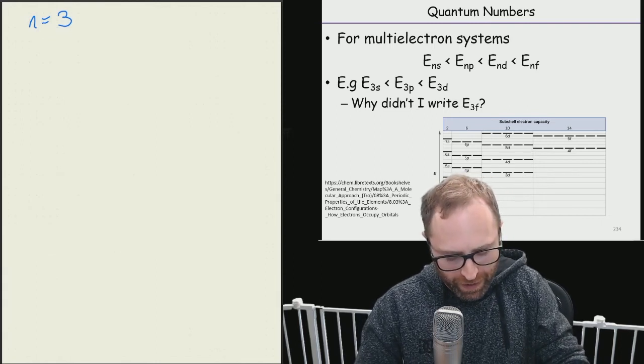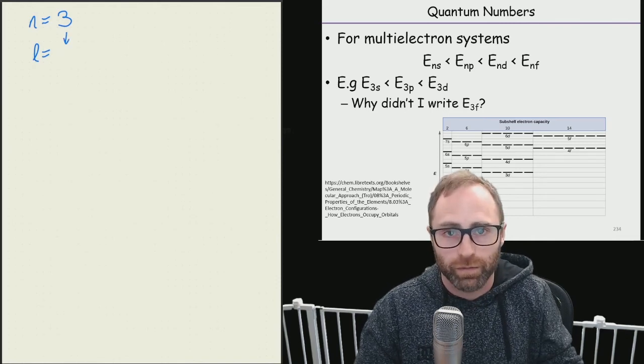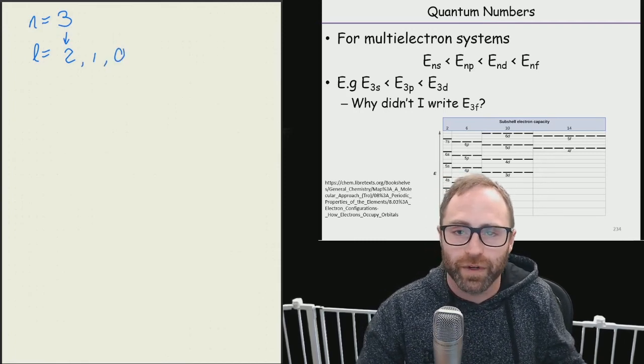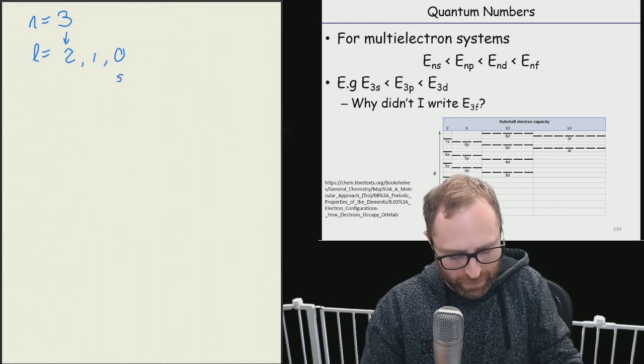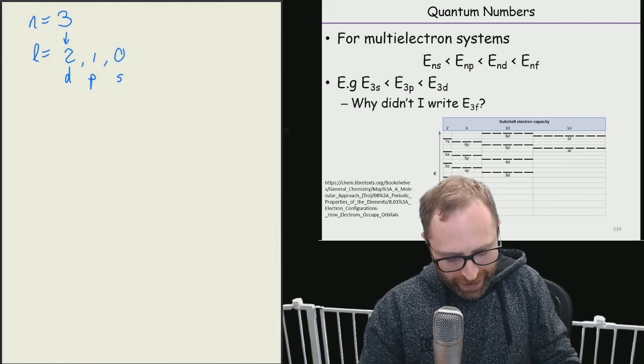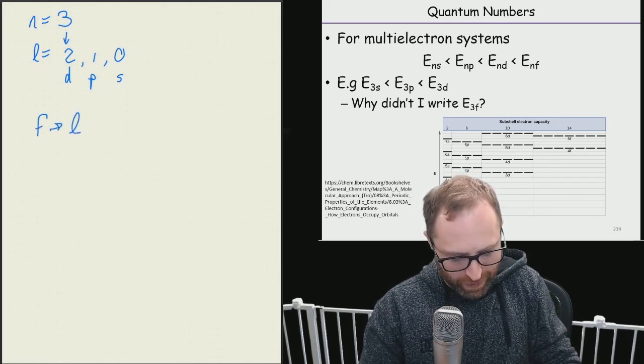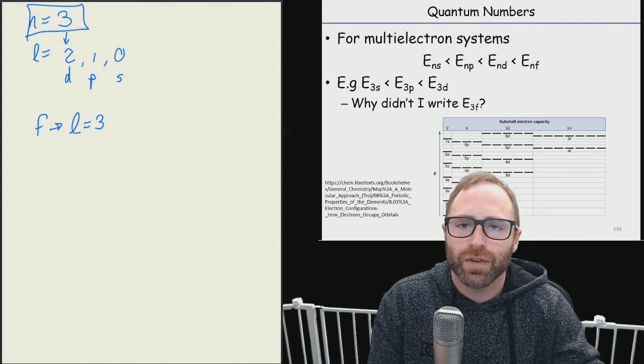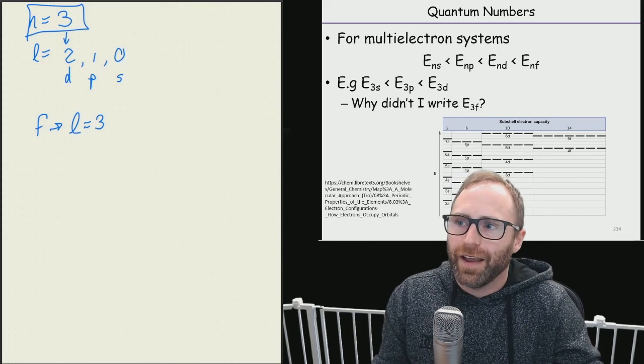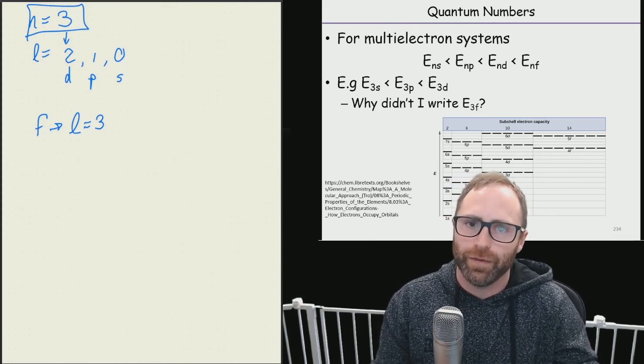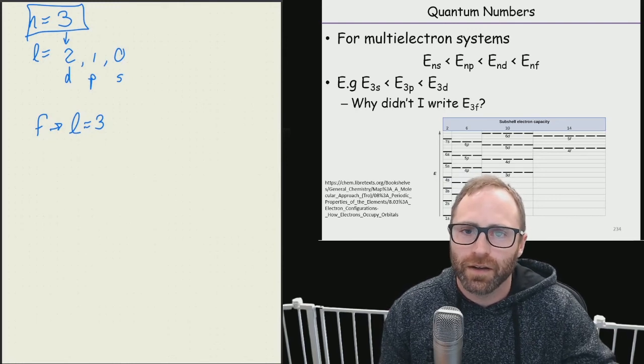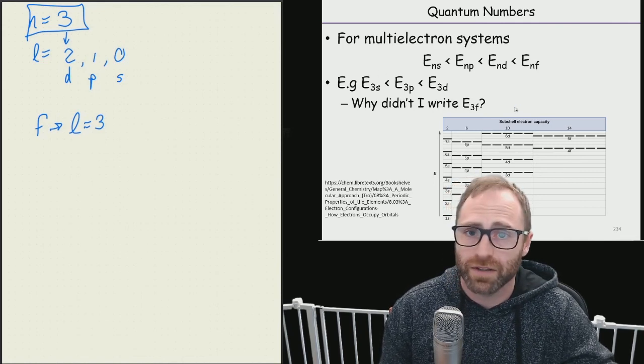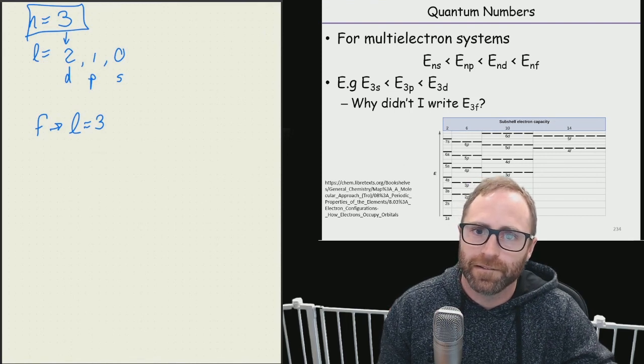All right, so if we have n equals 3, based off of our rules, l could equal a maximum of 2, or it could equal 1, or it could equal 0. And based off of previous lectures, our letter designations are s, p, and d. We would, in order to have an f, we have to have l equal 3. We can't have that if n is equal to 3, so you physically cannot have a 3f orbital. Yep, that's absolutely right. Does that make sense writing that out? Yes. Cool. Any questions? Nope. All right.